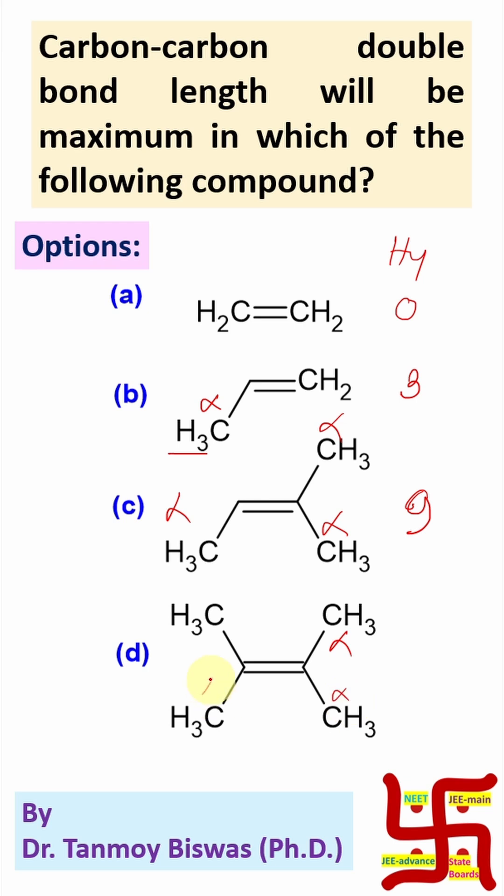But here, this is maximum actually four alpha carbon and 12 hyperconjugation possible. Now, here maximum number of hyperconjugation. So, the double bond character of this C=C double bond or pi bond will be minimum means these will be maximum bond length.